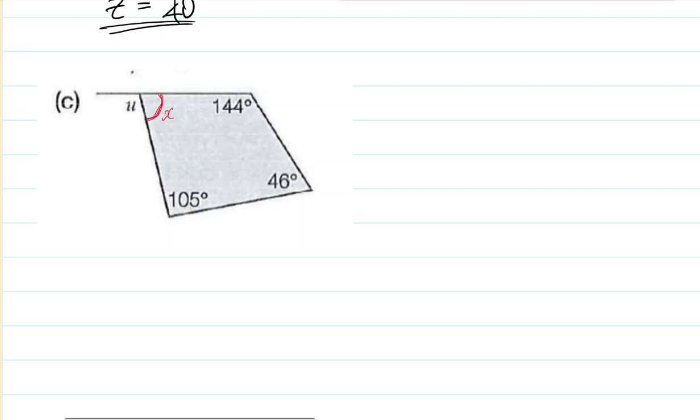Now, to find X is very simple, like question 1 part A, even easier than that one. All you've got to do is add all of these, and they should add up to 360. So let's go. So I've got X plus 144 plus 105 plus 46, that should equal to 360.